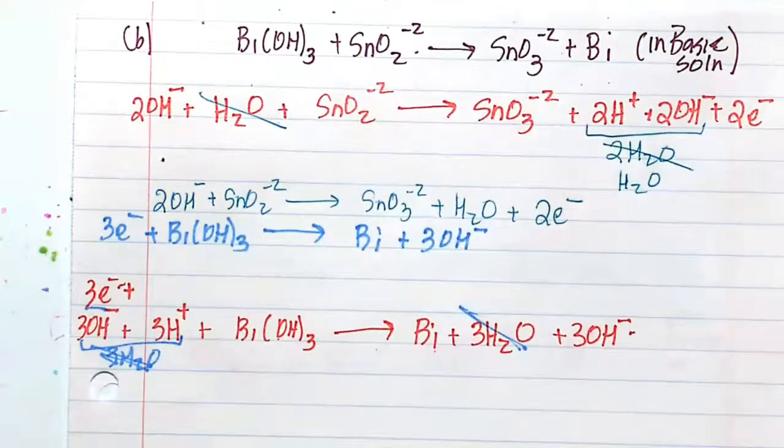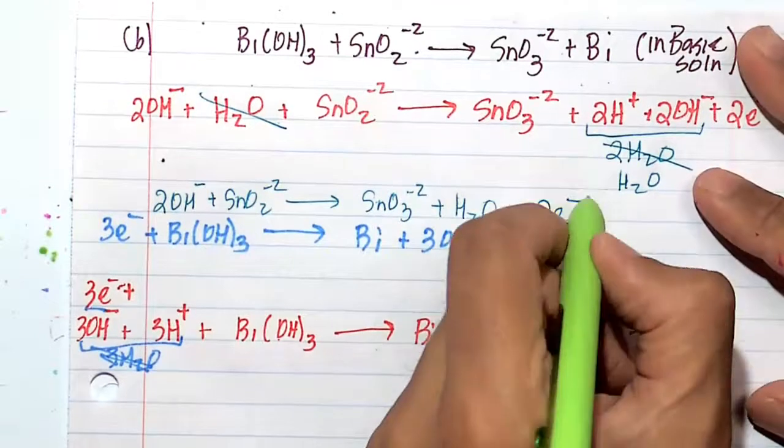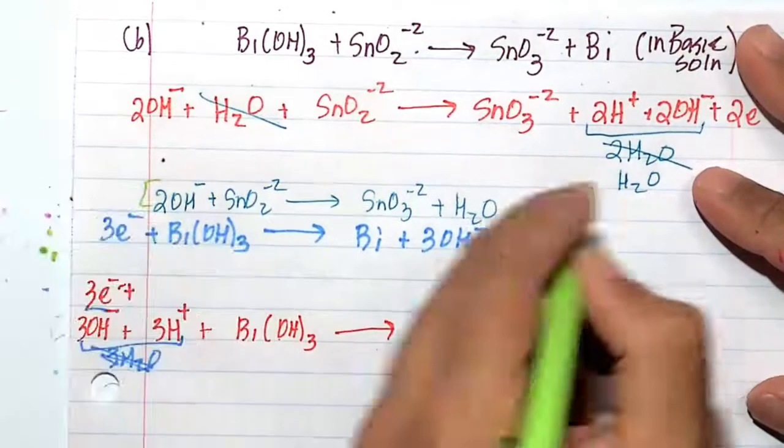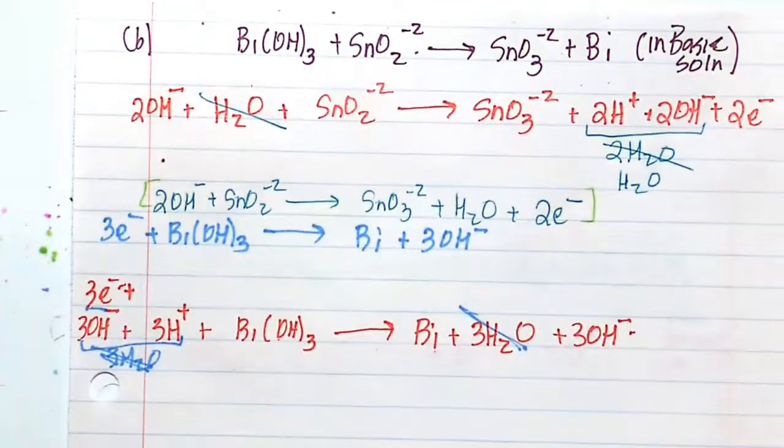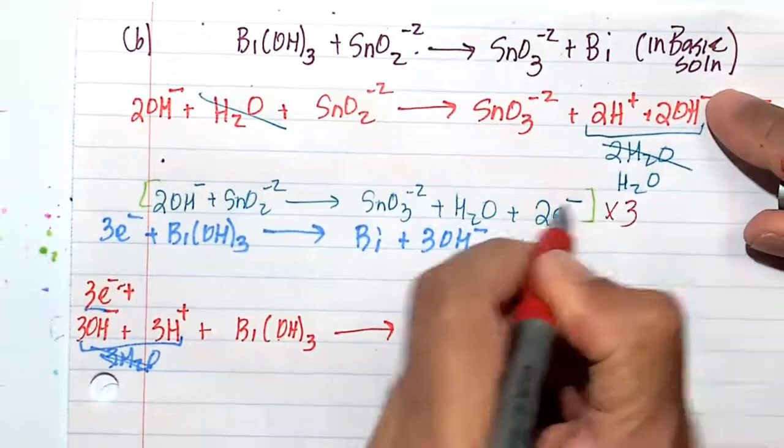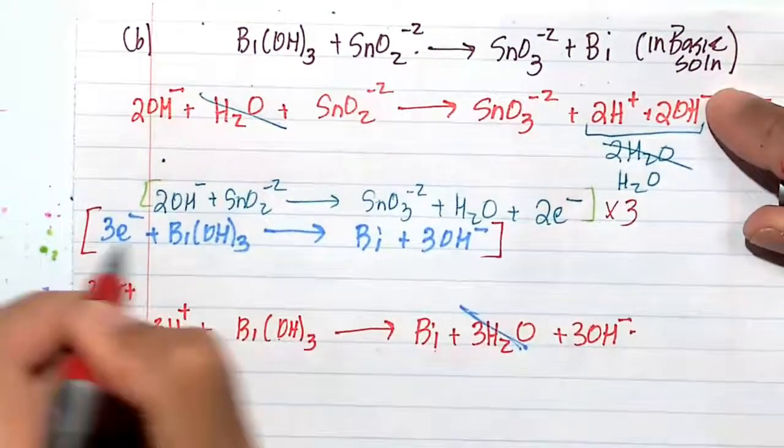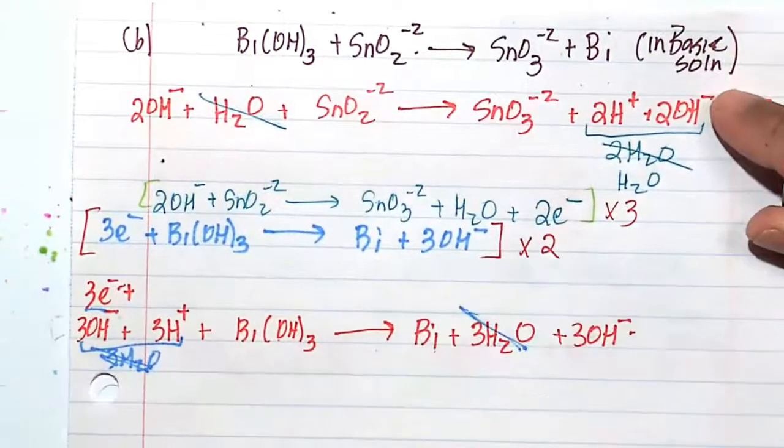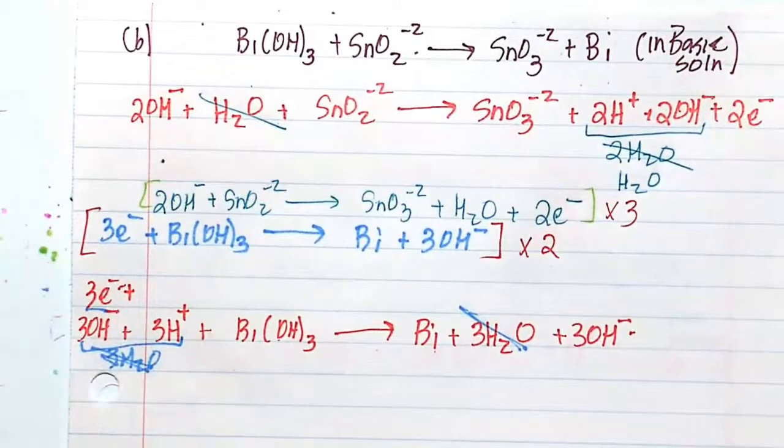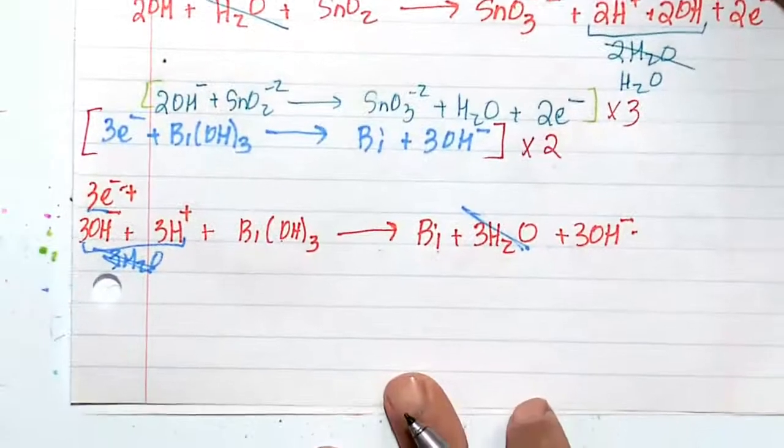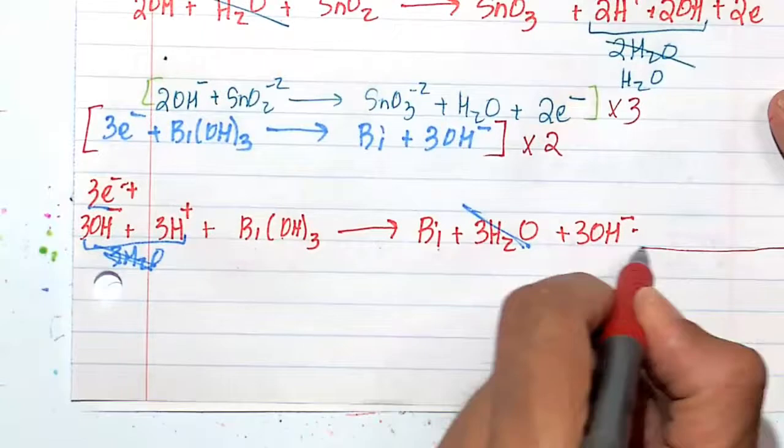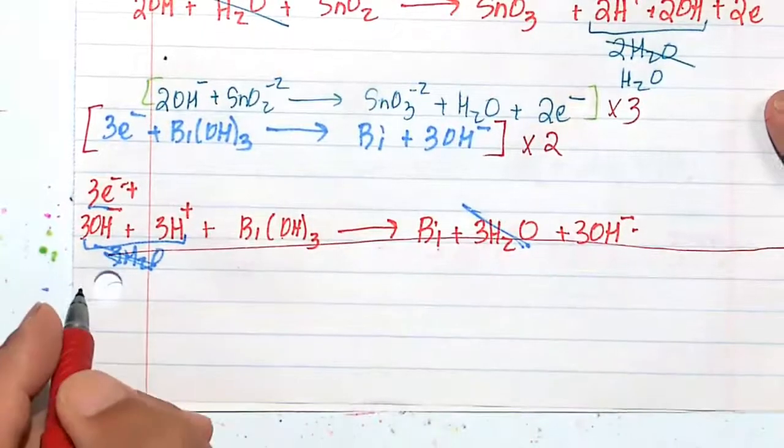Now what's next is we have to cancel out the electrons. So on this side, the top side, we're going to multiply by 3. Okay, we're getting rid of the free electrons. On the bottom side, the reduction half reaction, we're going to multiply it by 2. So let's quickly rewrite this out and add them together. And that should give us the final answer here.